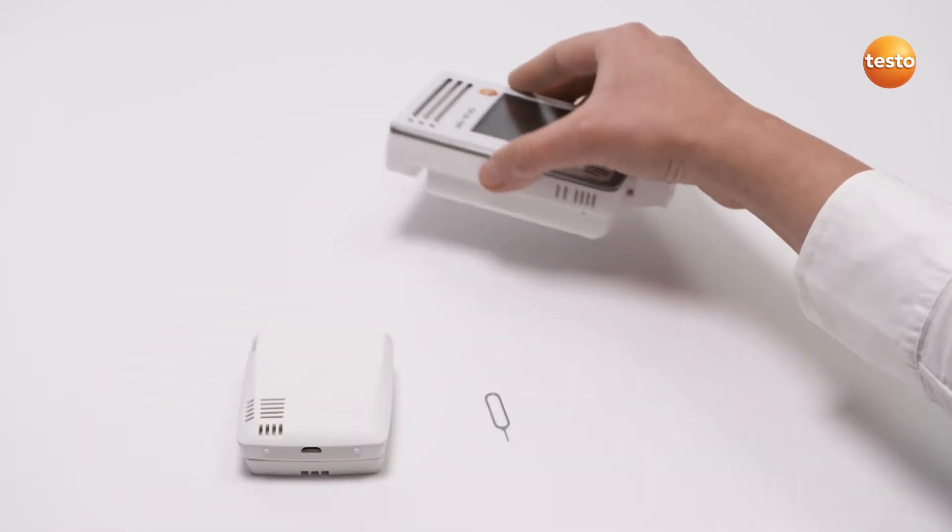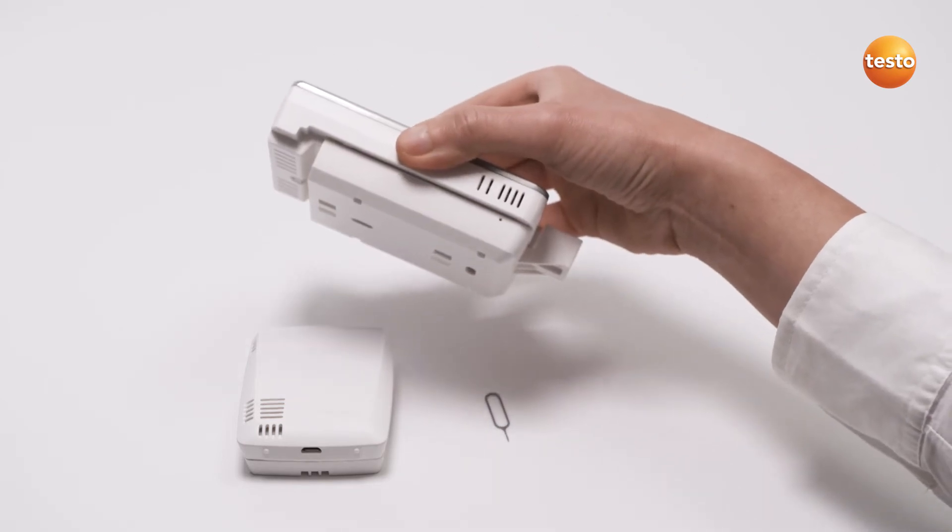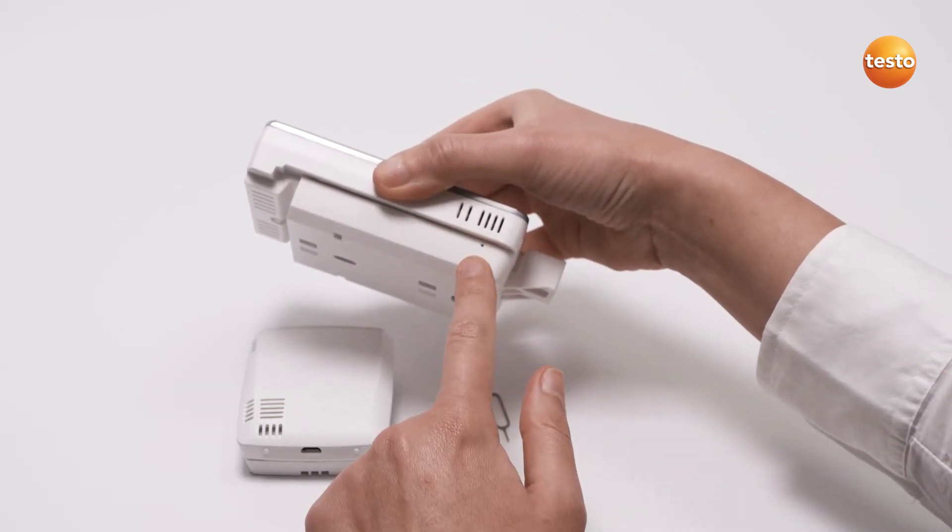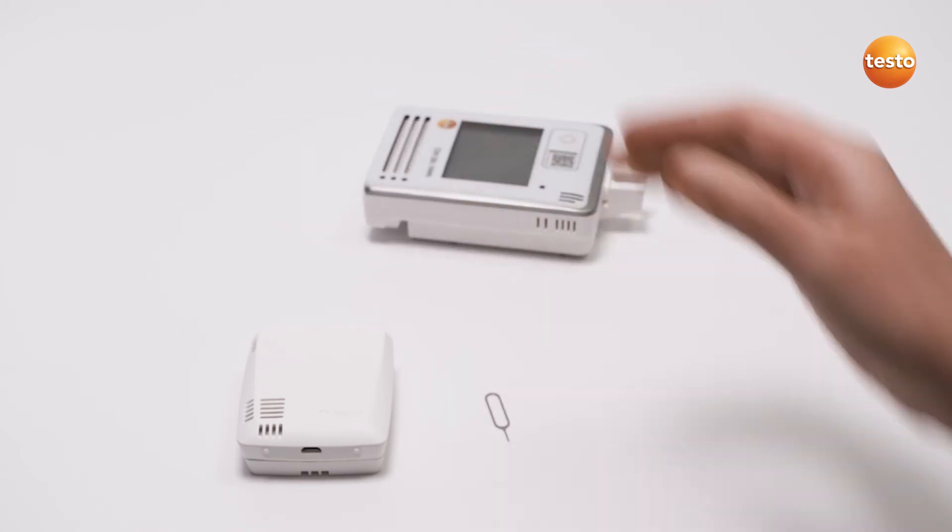The unlocking aperture is on the left-hand side of the Wi-Fi data logger Testo 160 IAQ. The other steps are identical.